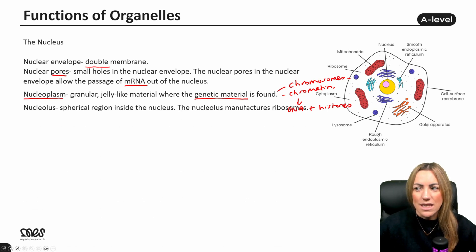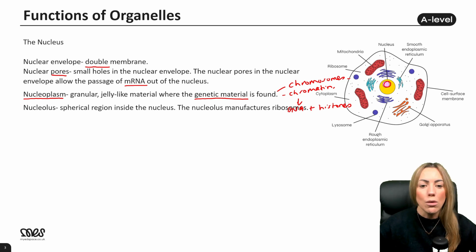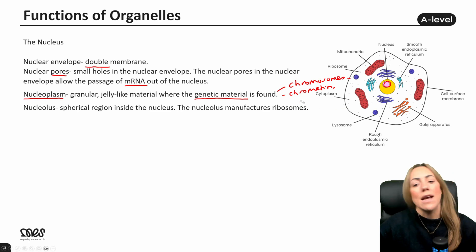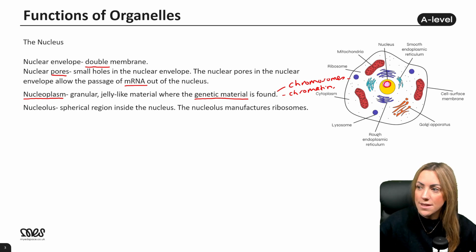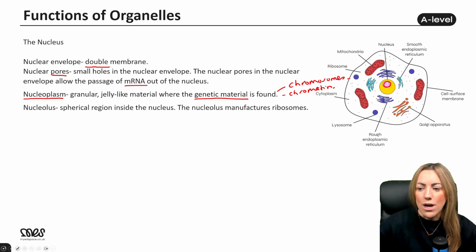The nucleolus is the spherical region inside the nucleus. The nucleolus makes ribosomes. So in terms of linking structures and functions, if we name the nucleolus as a structure, we can say it's responsible for making those ribosomes.